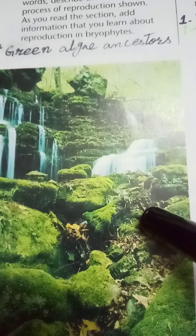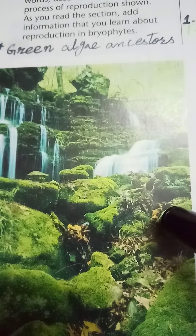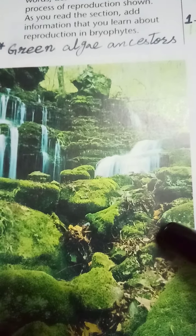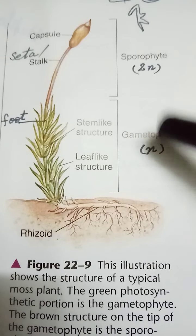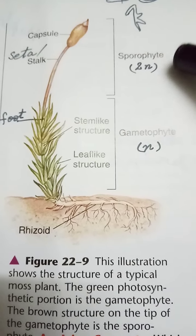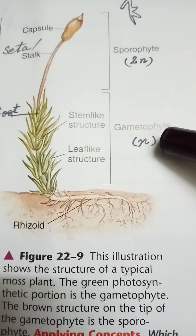The plant body is thallus-like and is not differentiated into true root, stem, and leaves. It is attached to the substratum with the help of rhizoids. Bryophytes also show alternation of generation — they have both gametophytic and sporophytic phases during their life cycle.